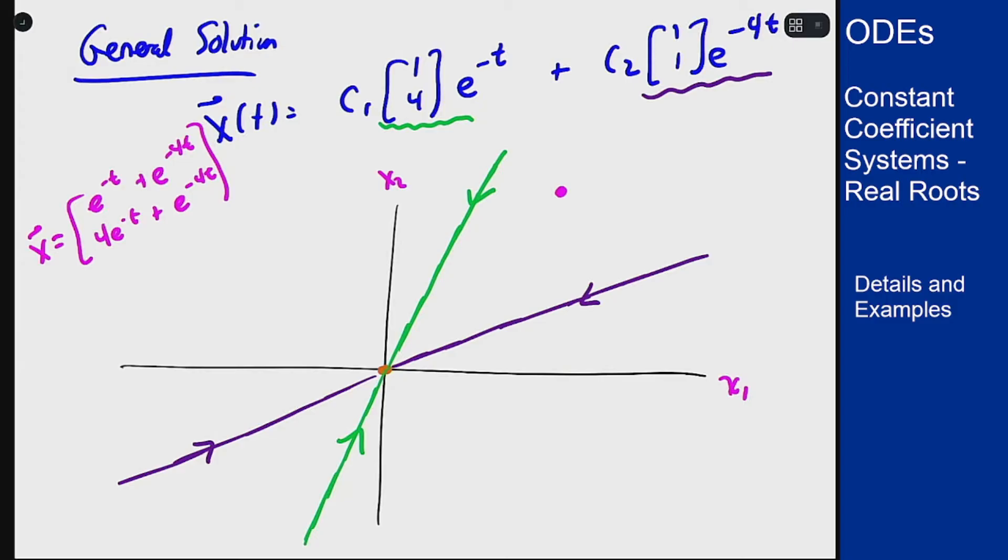Now how is it going to go to zero? Well if we notice as t gets bigger, this term here is going to zero a lot faster than this term because this is e^(-4t) not e^(-t). So this term will go away really fast but this only goes away kind of fast.